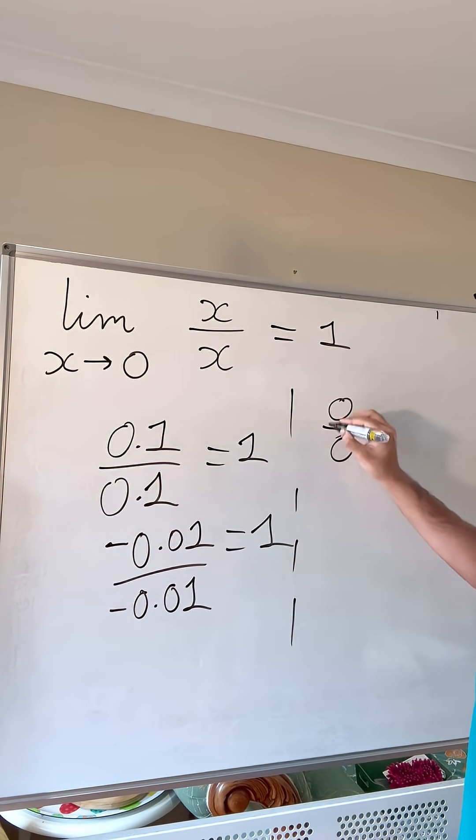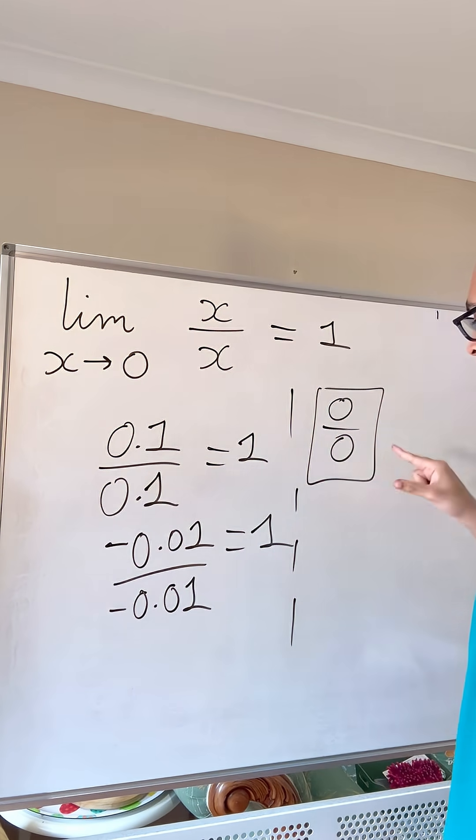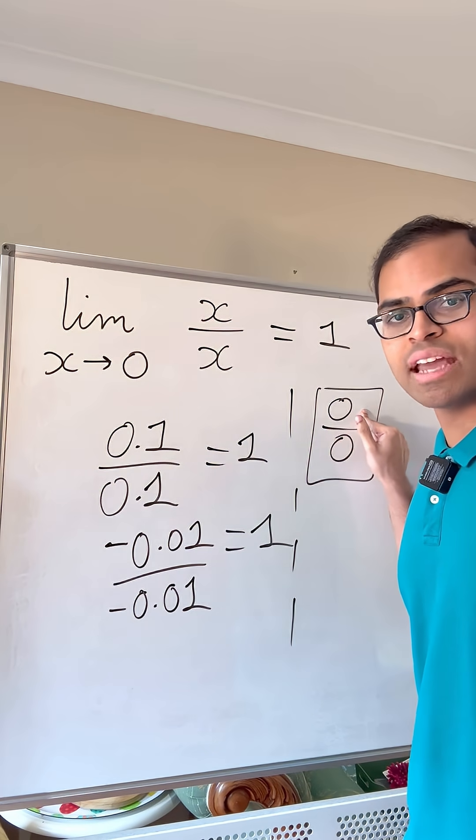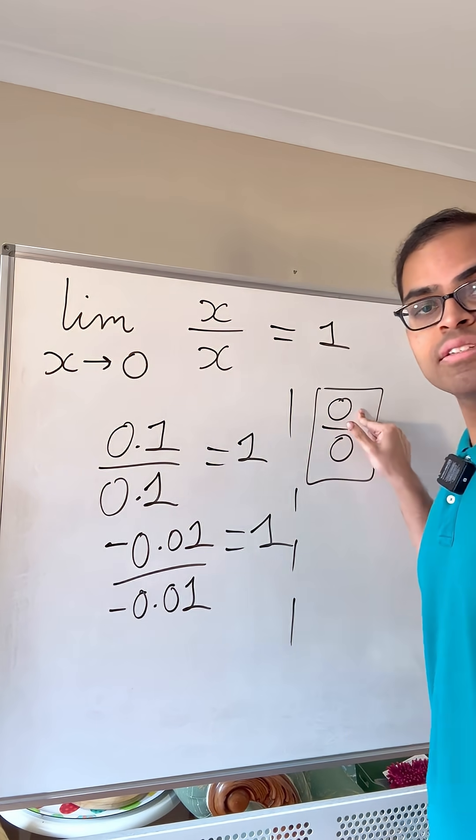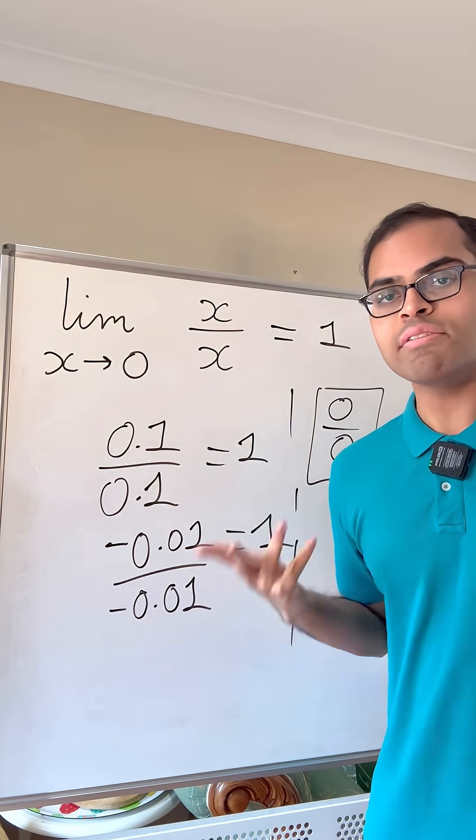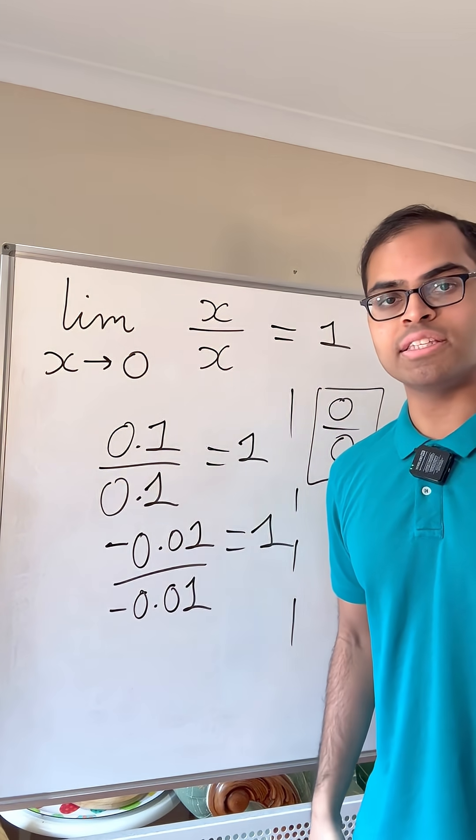0 over 0 is undefined. Why is 0 over 0 undefined? There is no number that you can multiply with the denominator to get the numerator. Well, actually, every number works. 5 times 0 is 0. 10 times 0 is 0. So what is 0 over 0? It's undefined. There is no value. So this limit is 1, even though x over x is undefined at 0.